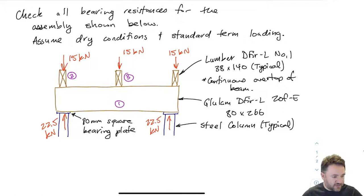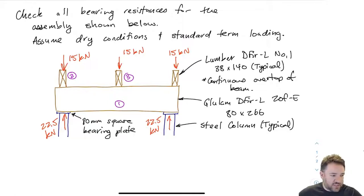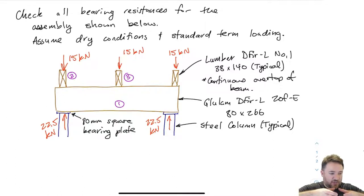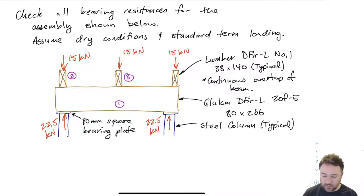The sizes here: we basically have two-by-six joists on an 80 by 266 glulam beam. The steel columns have a base plate geometry which is just an 80 millimeter square plate.